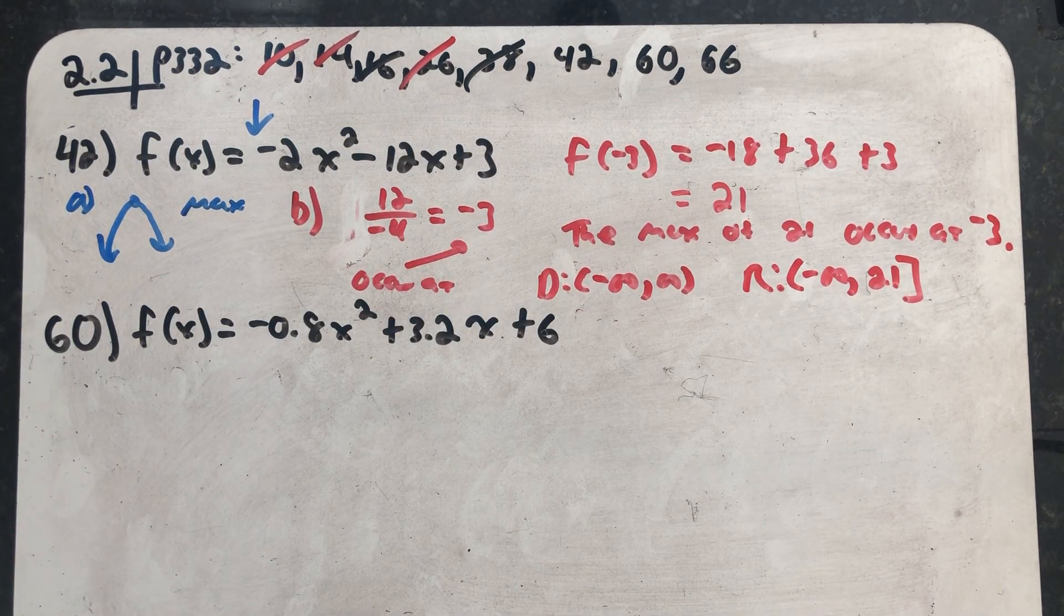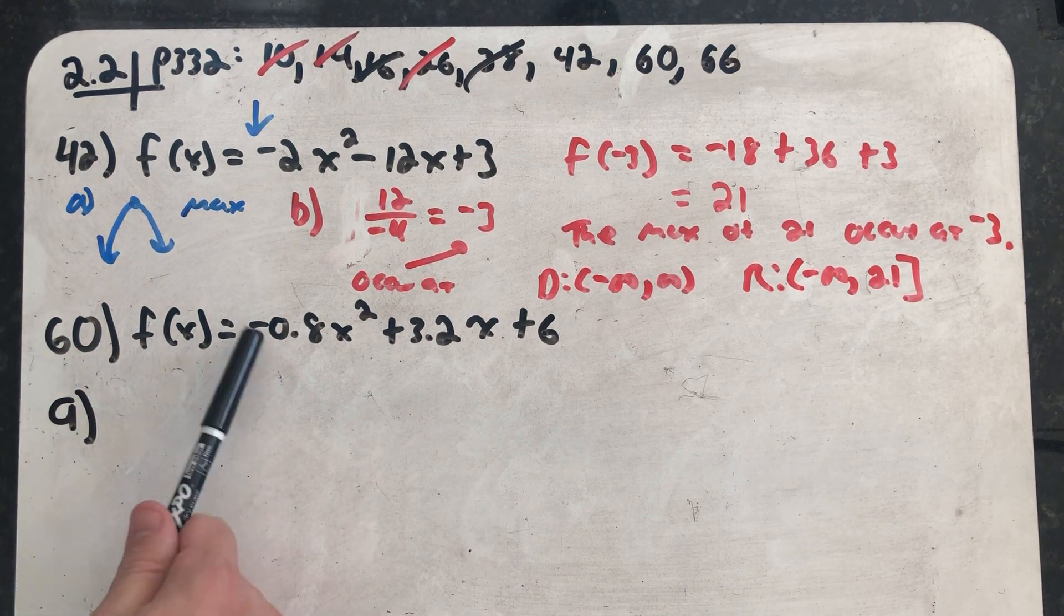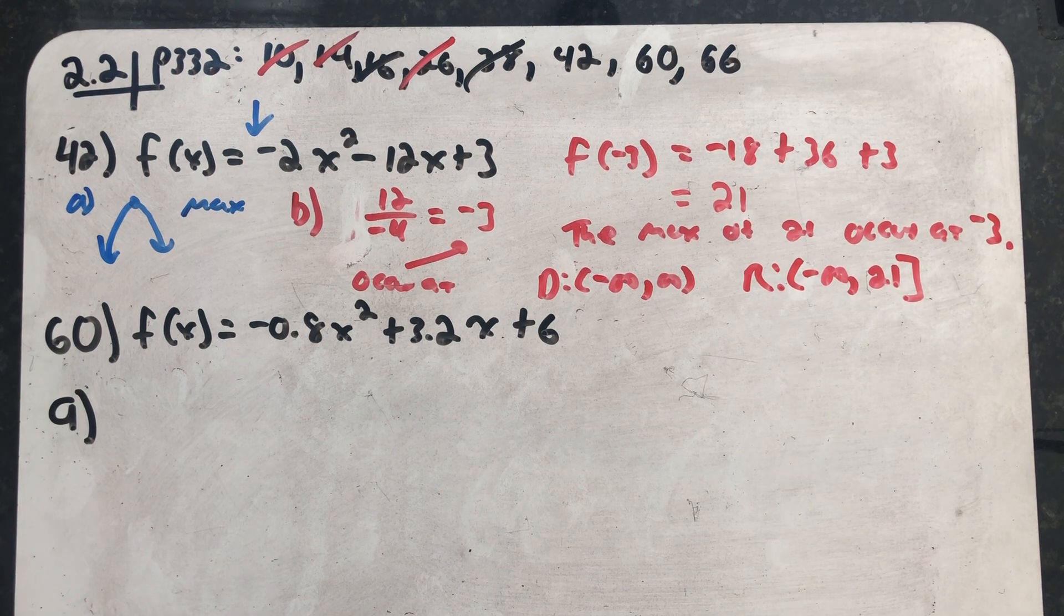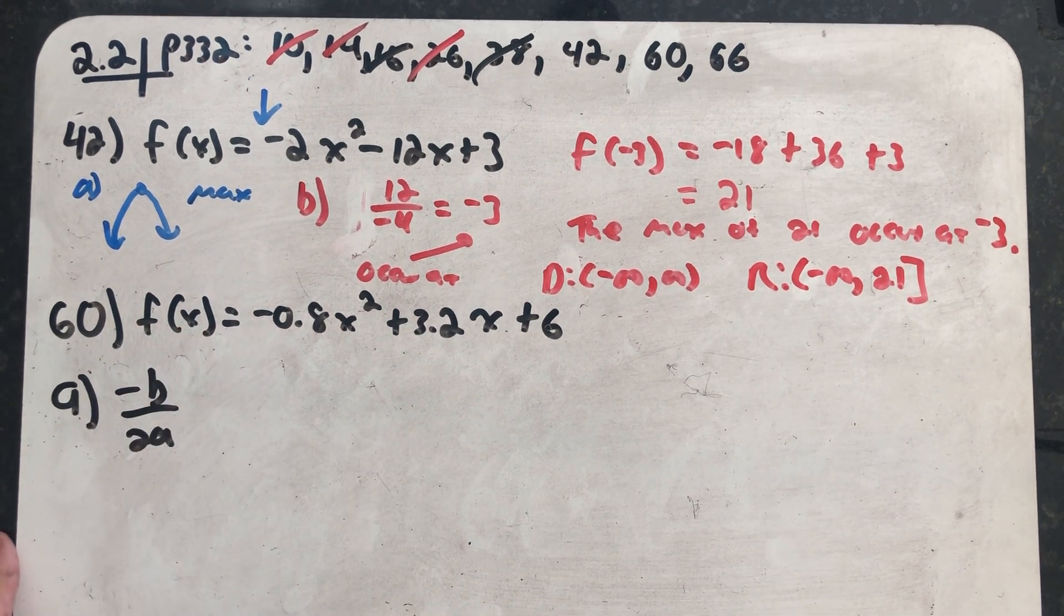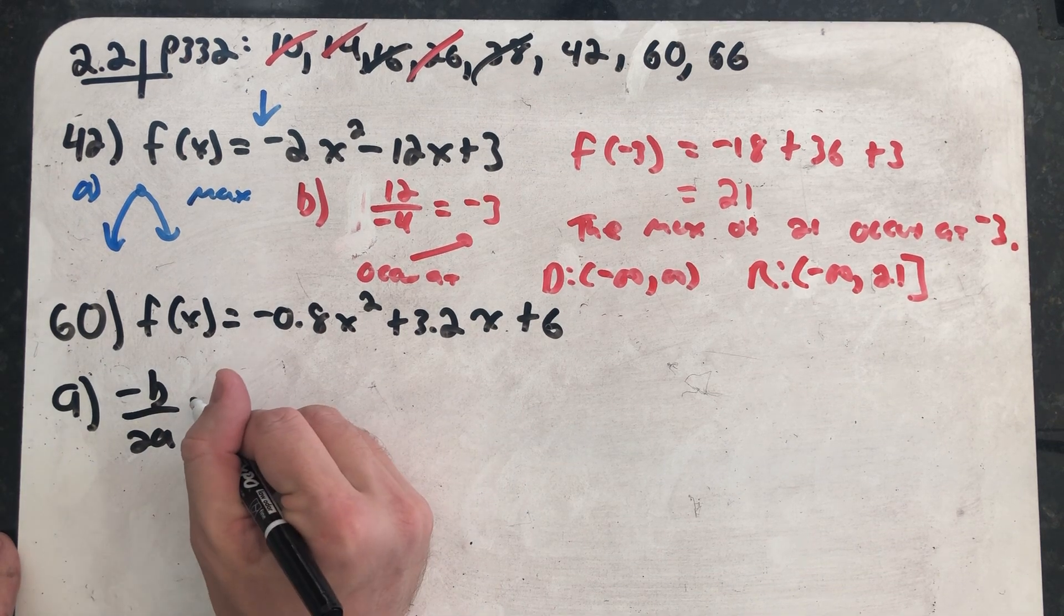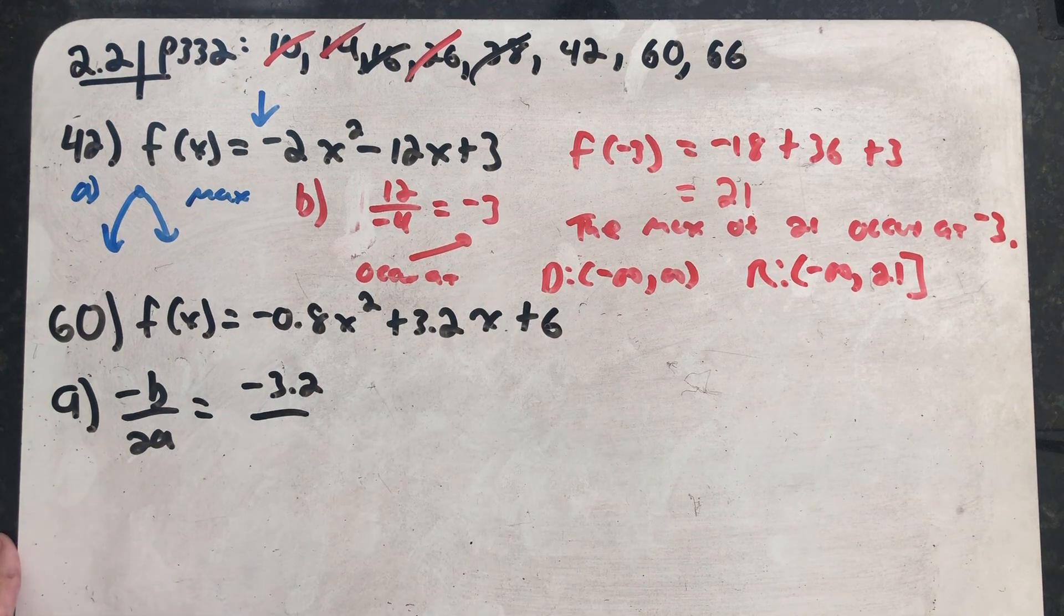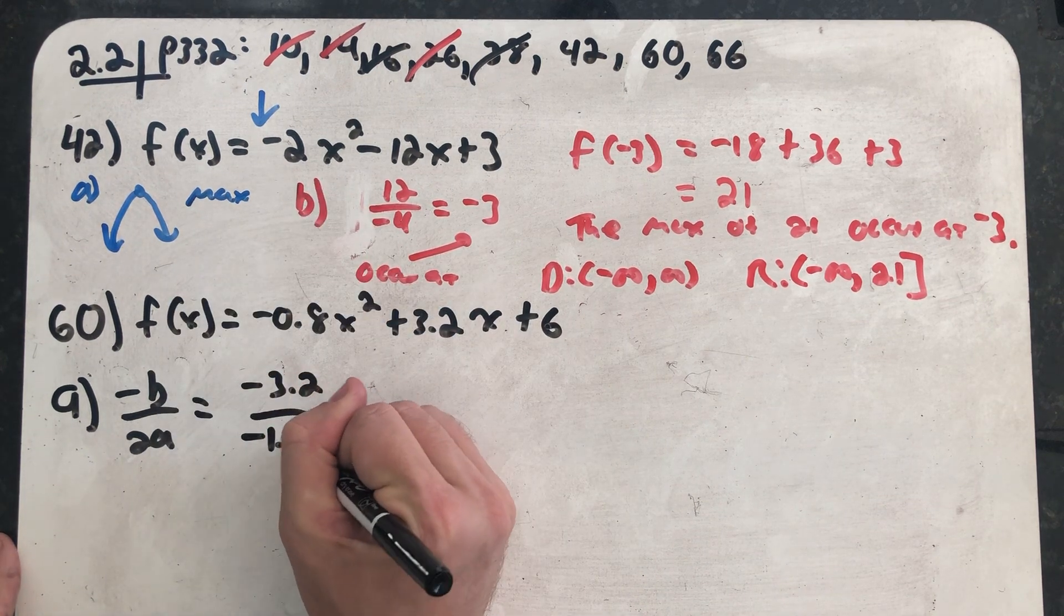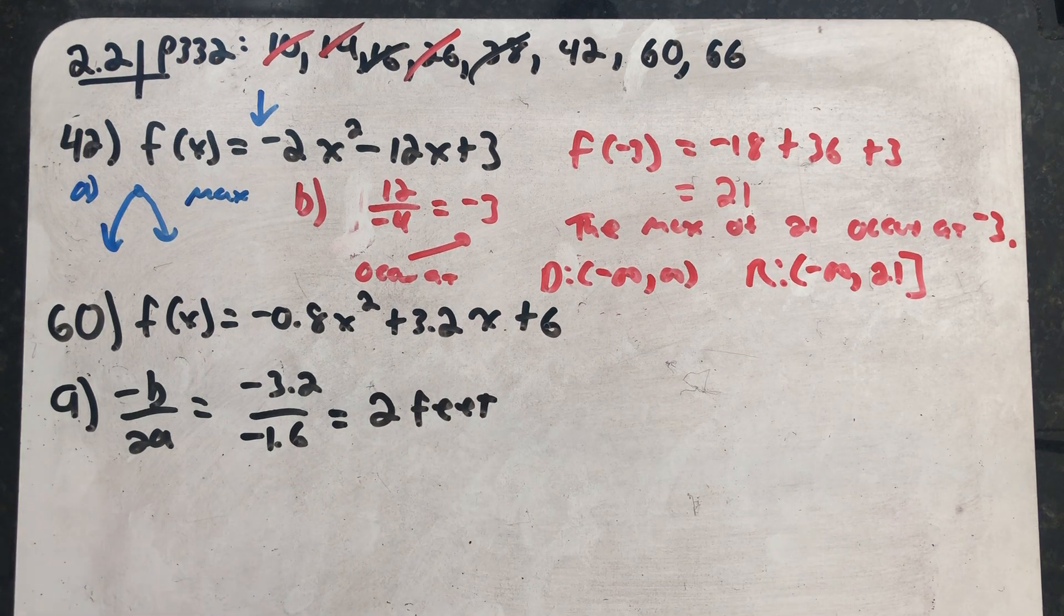Well, part A. I'm asked to talk about a maximum height. Again, it's a parabola that faces down, so this is really just a question about the vertex. So I have the opposite of B over 2A. That will tell me the x value where that occurs. So I have minus 3.2, the opposite of B, all over 2A. The vertex happens at x equals 2 feet.